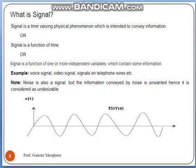So what do you mean by a signal? A signal is a physical quantity which varies with respect to some variable, and that variable most of the time is time. Signal is defined as the time-variable quantity which conveys information, or it is also defined as a function of time. A signal is a function of one or more independent variables which possesses some information.